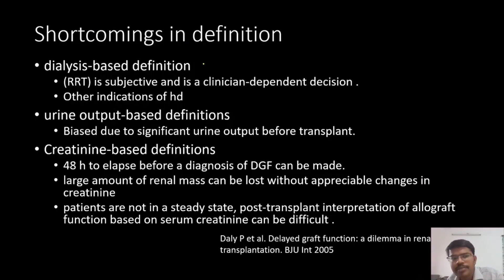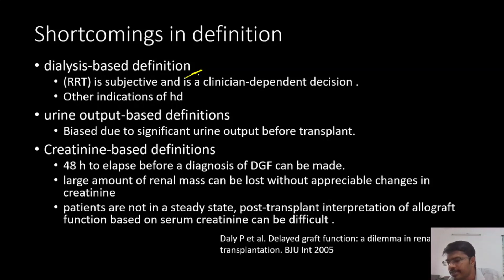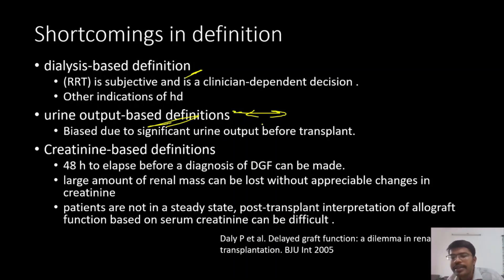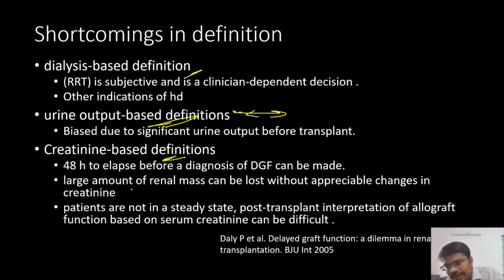The drawbacks of these definitions: if the definition is based on dialysis, then giving renal replacement therapy is subjective — there is no standard criteria to start dialysis in the post-transplant period. Urine output criteria are biased because urine output might be normal in the pre-transplant period in cases of tubular interstitial diseases. Creatinine-based definitions cannot exactly define renal function in the post-transplant period because there might be variations.